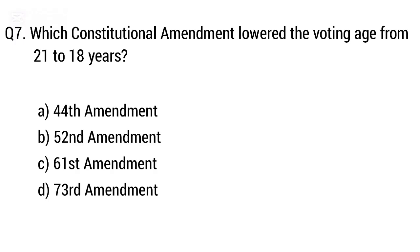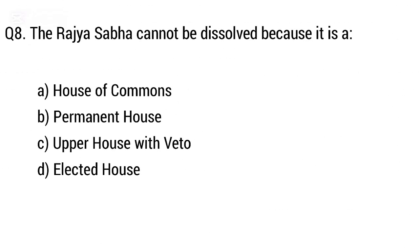Question 7: Which constitutional amendment lowered the voting age from 21 to 18 years? The right answer is option: 61st Amendment.